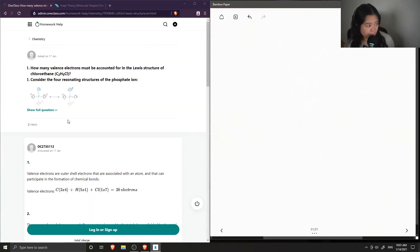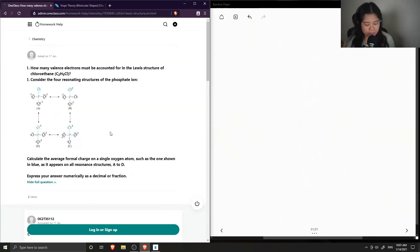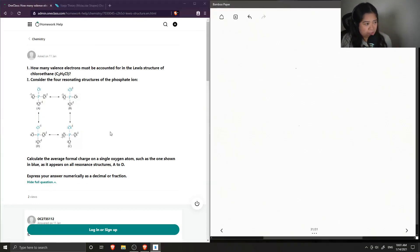Okay, so question one is a multi-step question. Part one asks how many valence electrons must be accounted for in the Lewis structure of chloroethane? And then step two, consider the four resonating structures of phosphate.